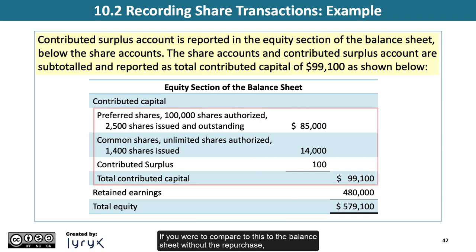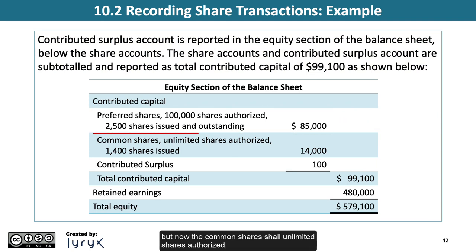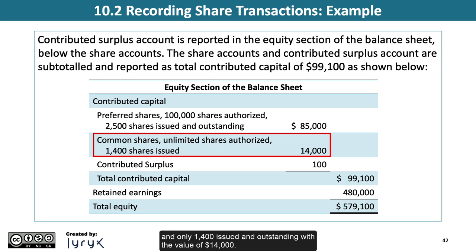Comparing to the balance sheet without the repurchase, the preferred share disclosure is unchanged, but now the common shares show unlimited shares authorized and only 1,400 issued and outstanding, with a value of $14,000.